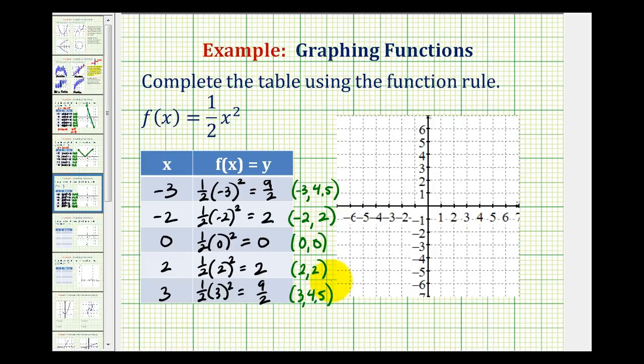Let's go ahead and plot these five points and see if it gives us enough information to make a nice graph of the function. So negative three, four point five would be here. Negative two, two here. Zero, zero. And then we have two, two, and three, four point five.